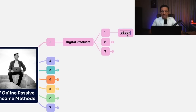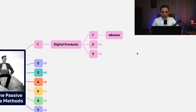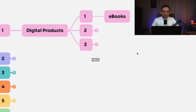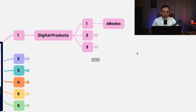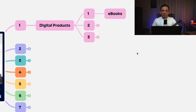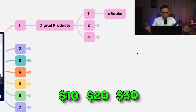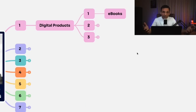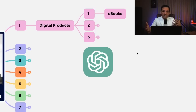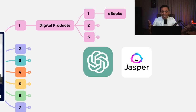The first category is selling e-books — selling any kind of knowledge or information for $10, $20, $30. They're easy to create, and now with many tools available, including ChatGPT and multiple other things, it's very easy to create textual content.